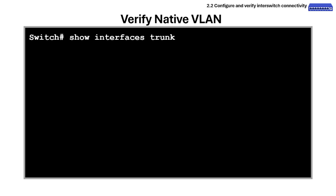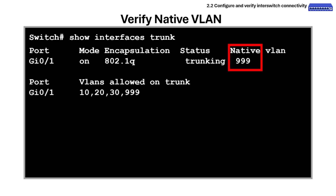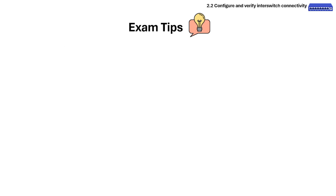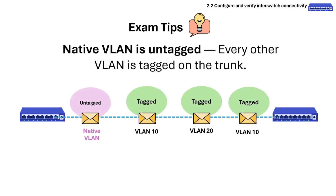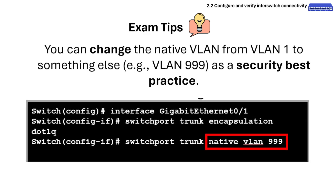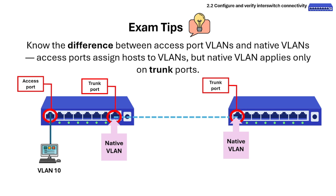Here are commands to verify the native VLAN. The show interfaces trunk command displays the native VLAN on the trunk port. Exam tips: always match the native VLAN on both sides of a trunk to avoid mismatches. Native VLAN is untagged — every other VLAN is tagged on the trunk. You can change the native VLAN from VLAN 1 to something else as a security best practice. Know the difference between access port VLANs and native VLANs — access ports assign hosts to VLANs, but native VLAN applies only on trunk ports.